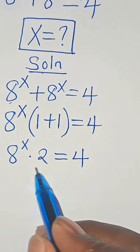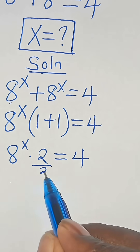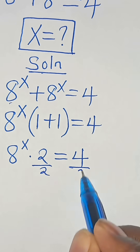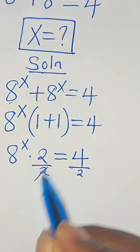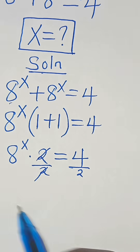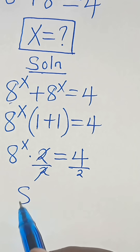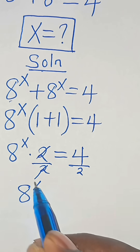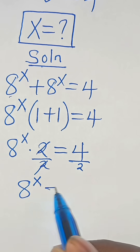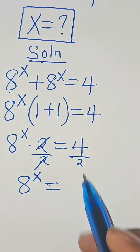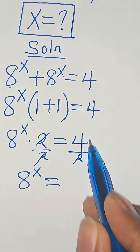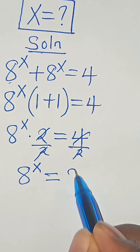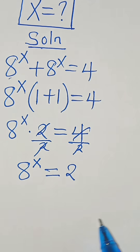So let's divide both sides by 2, so that now we have 8 to the power of x, this is equal to 4 divided by 2, this is equal to 2.